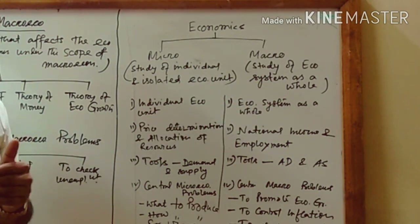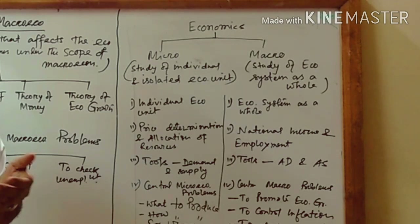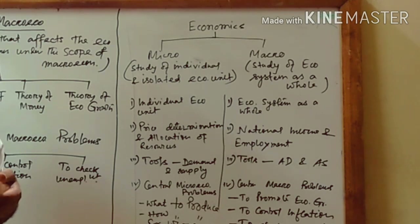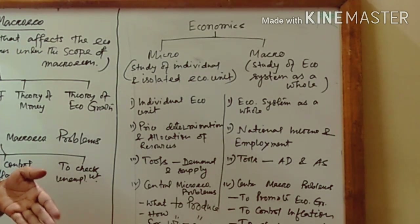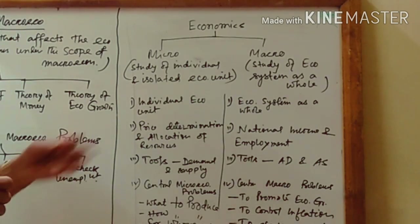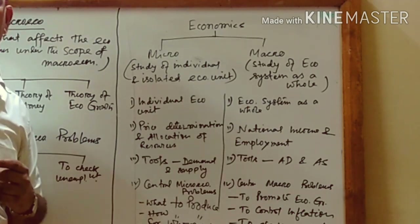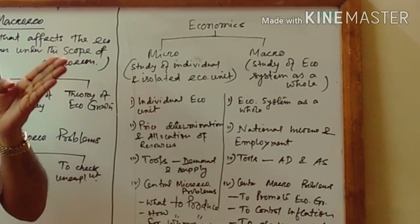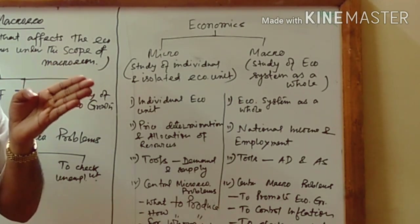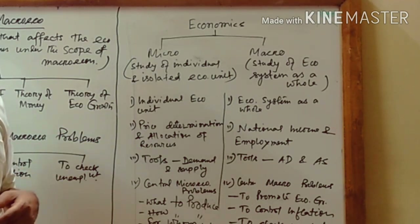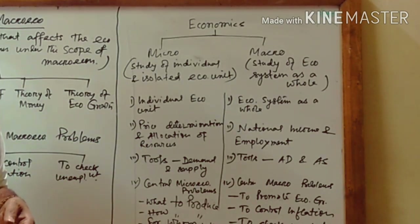Microeconomics is the study of an isolated and individual economic unit — it may be a firm, it may be one consumer, it may be a buyer or a seller, but a single unit. Macroeconomics, on the other hand, is the whole set, the total set — that is the totality. It is the study of the economic system as a whole, the study of aggregates.